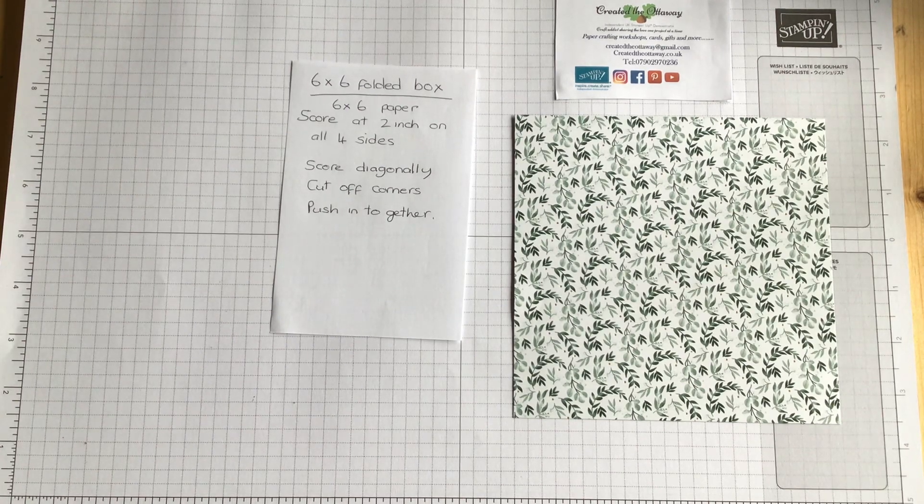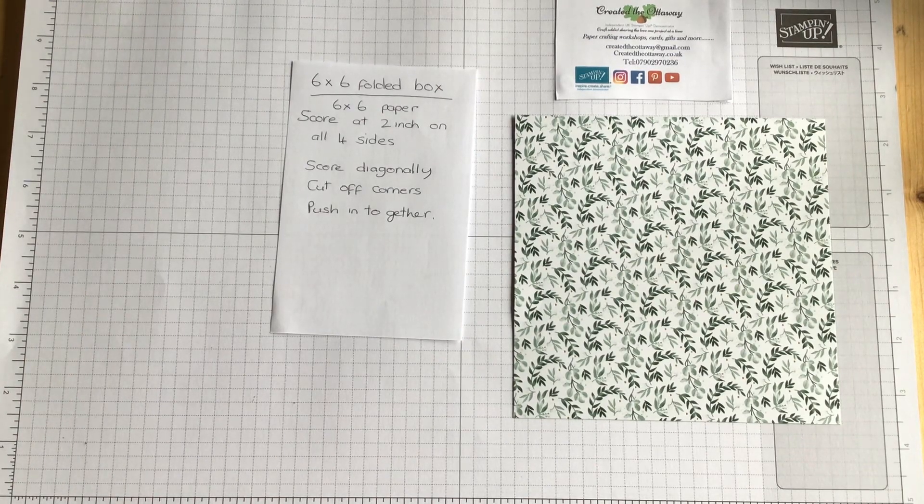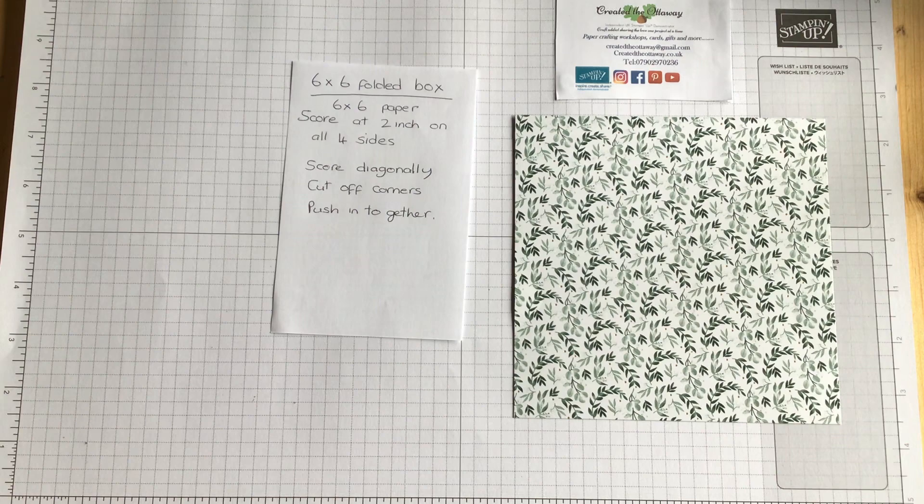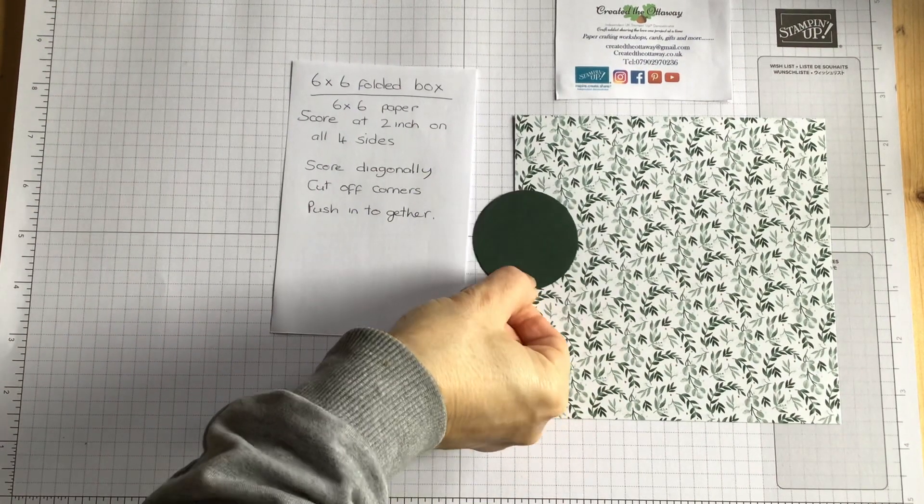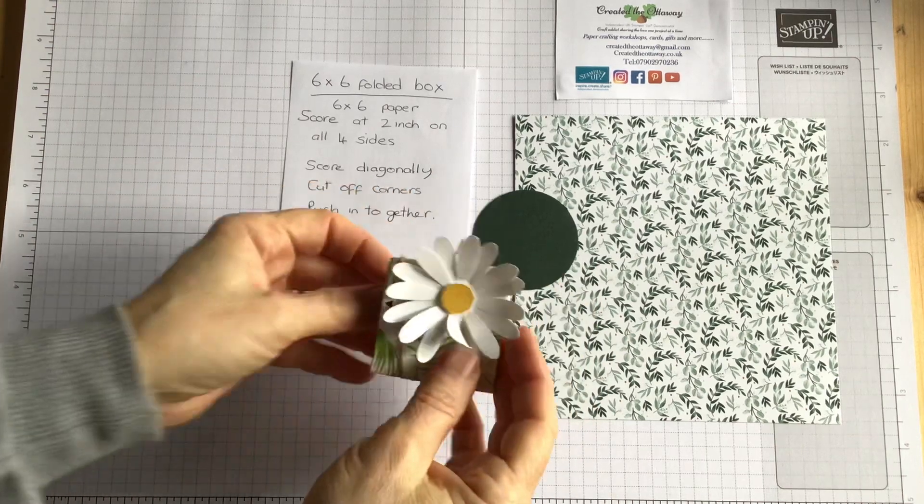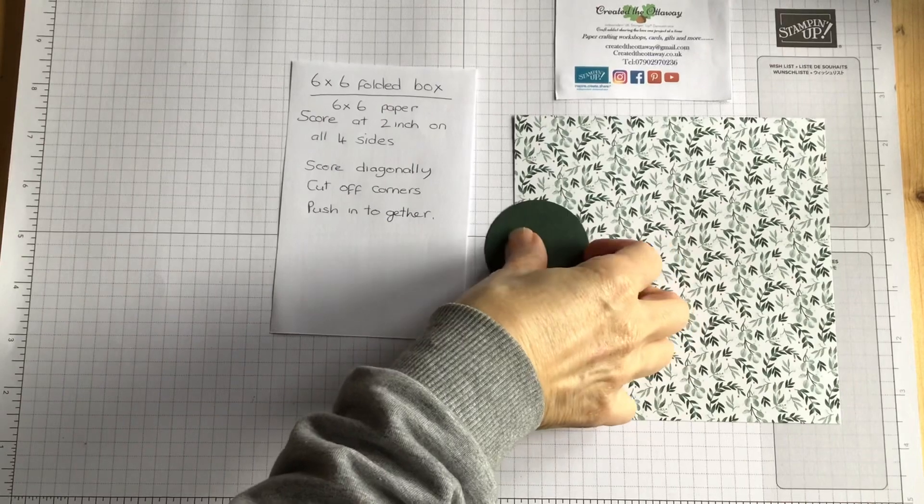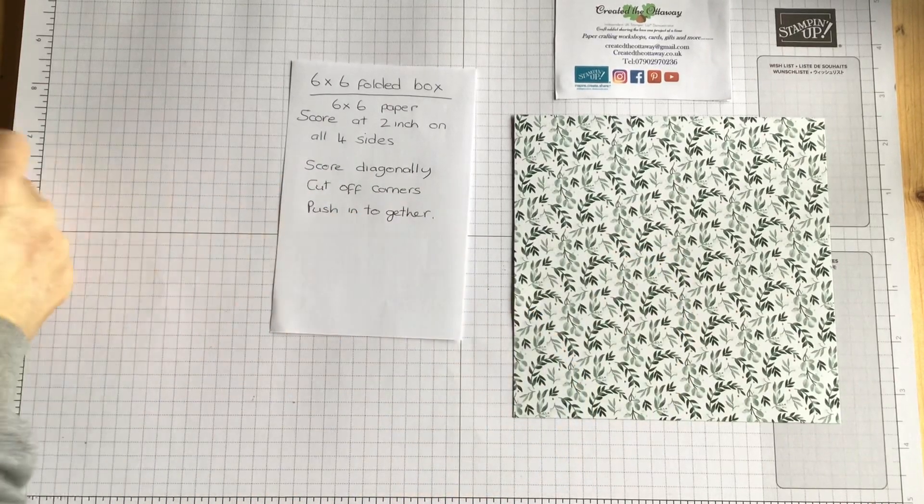Which I'll show you on camera, and cut the corners off, push it in all together, job done. The only thing you will also need is a 2-inch circle and then something that you're going to put on here. So it could be the daisy, it could be a ribbon bow, anything like that just to make it the special occasion that you need.